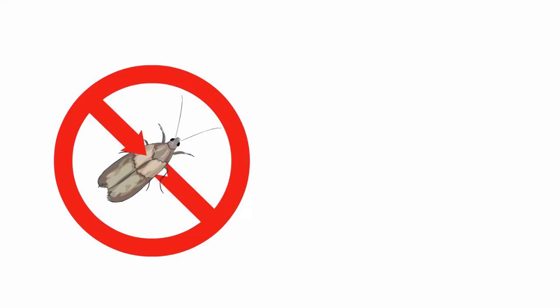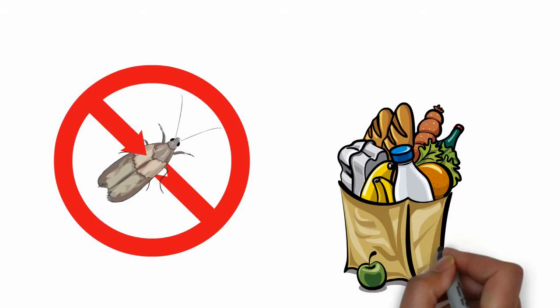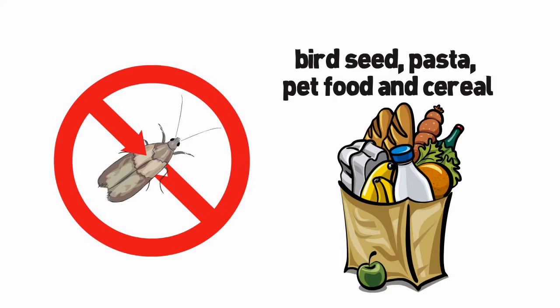Meal moths often travel as eggs in food packages. They can come in birdseed, pasta, pet food, and cereal.